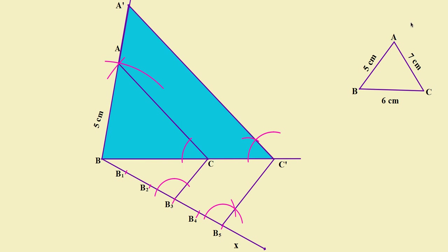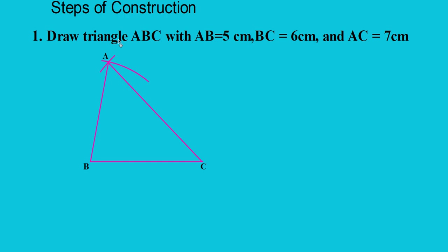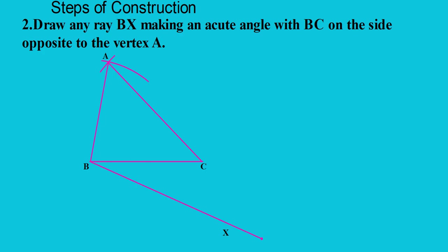Now let us see the steps of construction. Step 1: Draw triangle ABC with AB = 5 cm, BC = 6 cm, AC = 7 cm. Step 2: Draw a ray Bx making an acute angle with BC on the side opposite to vertex A.